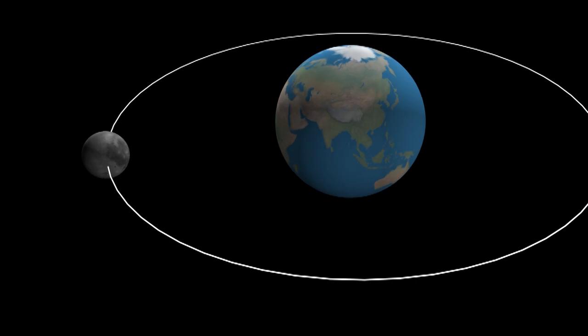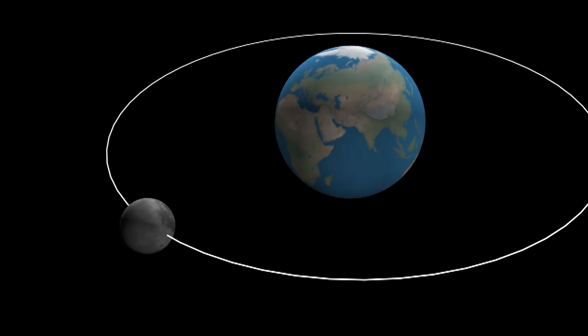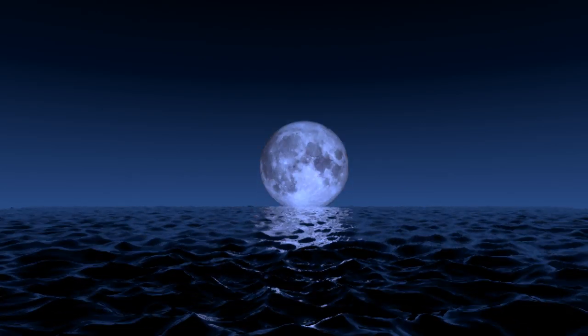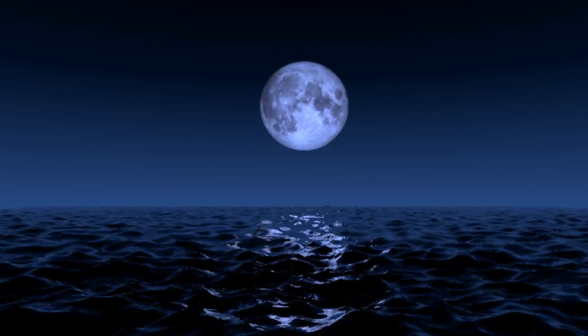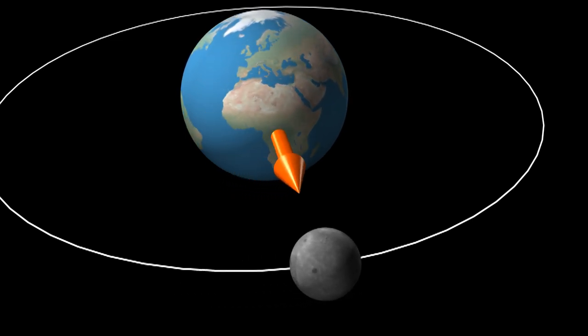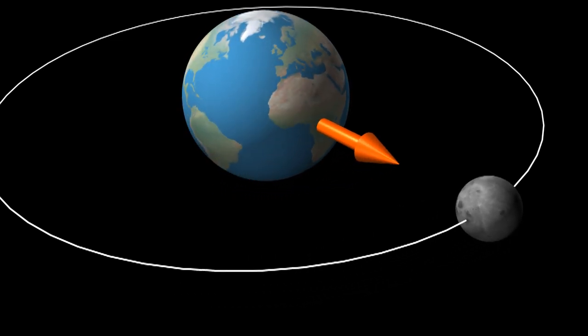In theory, this could happen to the Earth someday. If the Earth was tidally locked to the moon, the moon would no longer rise and set. It wouldn't move in the sky. And only one side of the Earth would ever see the moon.